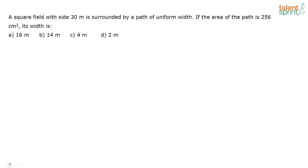A square field with side 30 centimeters is surrounded by a path of uniform width. If the area of the path is 256 centimeters squared, its width is?